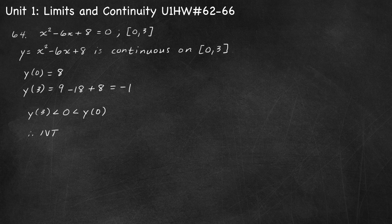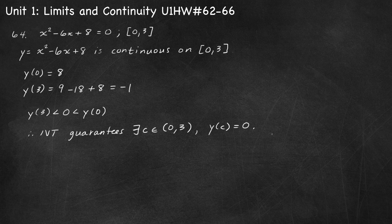Therefore, the IVT does guarantee the existence of a value c on the open interval from 0 to 3 such that y at c equals 0. In this problem we're also asked to go a step further and find that value of c. To do that we set our equation equal to 0 and solve, knowing our solution will be some x value between 0 and 3.